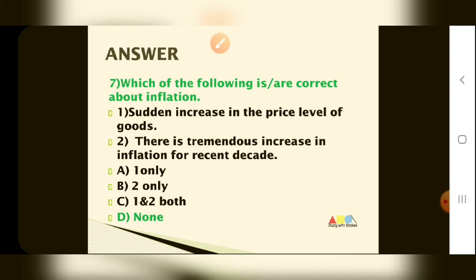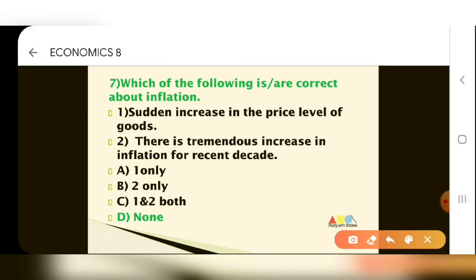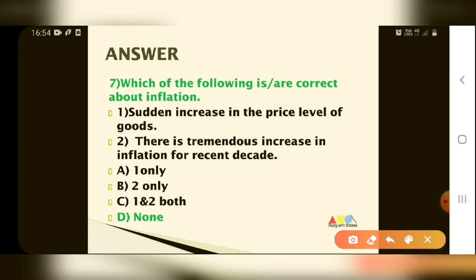So let's look at the answer. The question says: sudden increase in the price level of goods is called inflation — this is wrong. Why is it wrong? Because inflation means a continuous increase in the price level of goods. Sudden increase is not the correct definition.